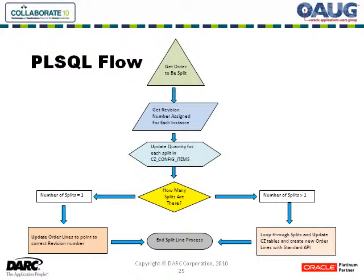At this point there's a decision to be made: how many splits are there? If there's just one — for example, somebody orders ten games and all ten have the same theme — there's no reason to run the full PL/SQL process. We simply update the order lines to point to the correct revision number. If the number of splits is greater than one, which is 90% of the time, it loops through the splits, updates the CZ tables, and creates new order lines with the standard API. Once achieved, the split line process ends.